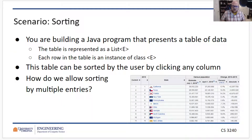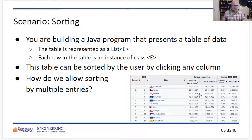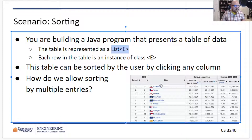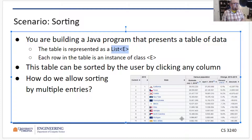Another design pattern we're going to talk about — a good working example — is sorting. Let's say your Java program had some tabular data. This is state population or estimated population data borrowed from Wikipedia. You might be representing each record as some class E, and your table is effectively just a list of class E. When displaying the table, you iterate through the list and each row is generated by looking at that data and producing the graphical representation.